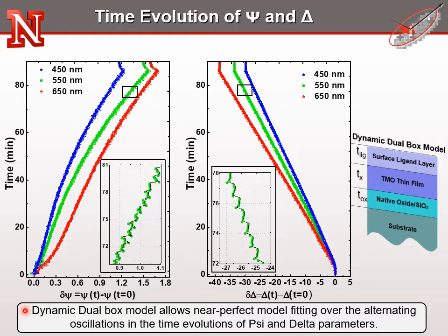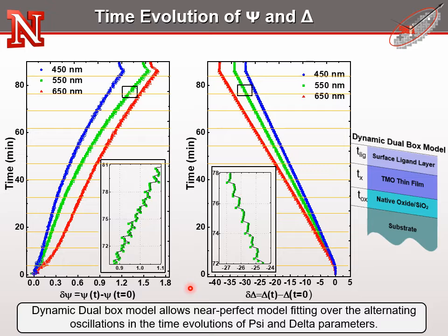It is clear from the inset zoom plots of psi and delta that there exist monotonous oscillations. It is important to note that the observed oscillations are not noise, but appear as a consequence of cyclic surface modifications due to the introduction of each precursor to the sample surface. In the inset plots, we can also easily see the best-match model calculations as black lines that are in excellent agreement with the spectroscopic ellipsometry data. Let me take equally spaced time slices from the in-situ spectroscopic ellipsometry data, which can be further employed in the multiple sample analysis approach to extract the dielectric function of the deposited zinc oxide ultrathin film, which will then be used in our retroactive in-situ data analysis as well.